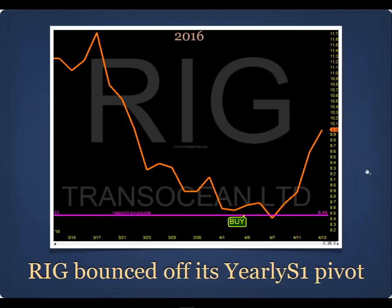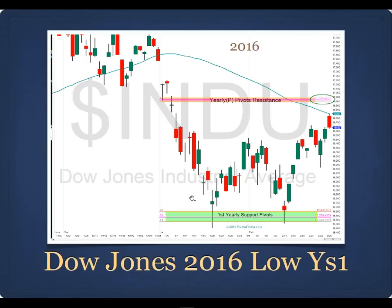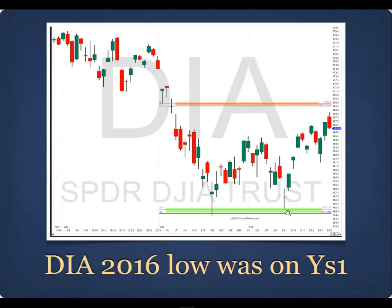The Dow Jones this year did a double bottom right on the yearly S1 pivot at $15,600. We're at $17,500 today. The yearly S1 pivot caught the pullback this year on the Dow. Same thing on the DIA. The key about pivots is they show me where to buy — no guessing, no Fibonacci retracement tools, no drawing lines. Just add this to your chart, look at price action, and it shows you where to buy and where to start scaling out and taking profits. And it's a free indicator available on most charting platforms.